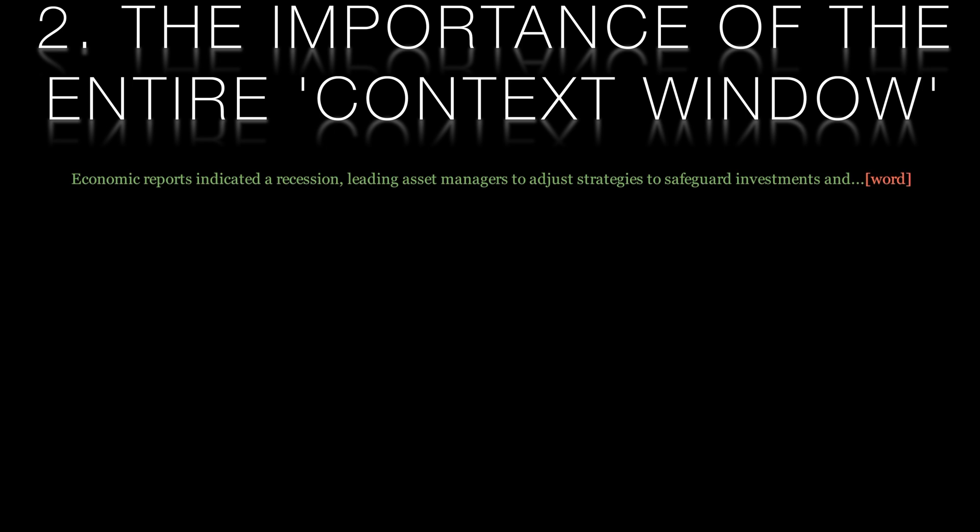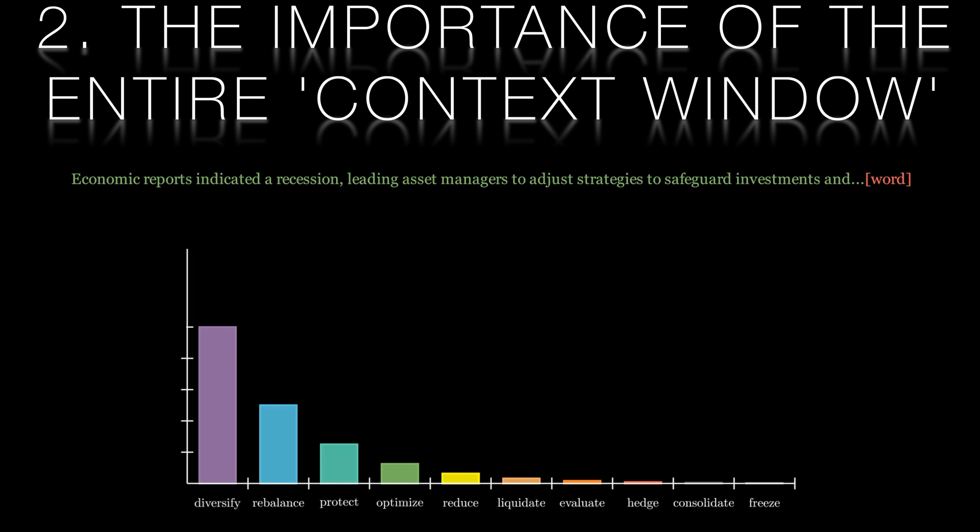Take this sentence as an example. Economic reports indicated a recession leading asset managers to adjust strategies to safeguard investments. And what should the AI predict next? Initially, words like diversify or rebalance might top the probability list. Each word has a likelihood of following the given context as our chart here illustrates.